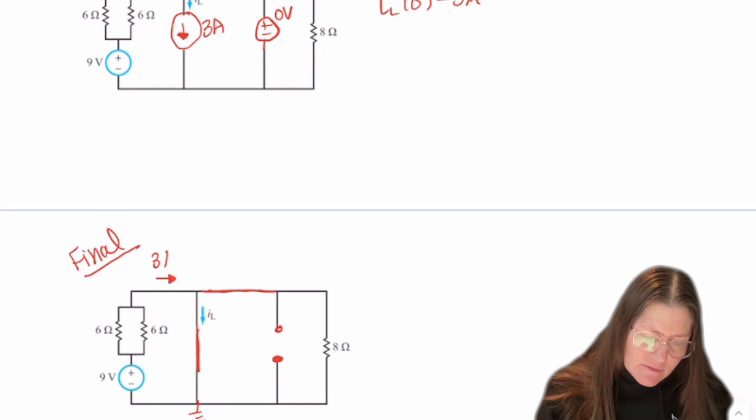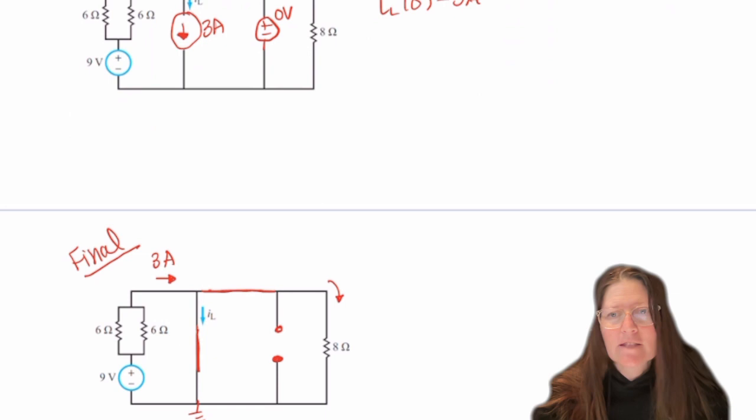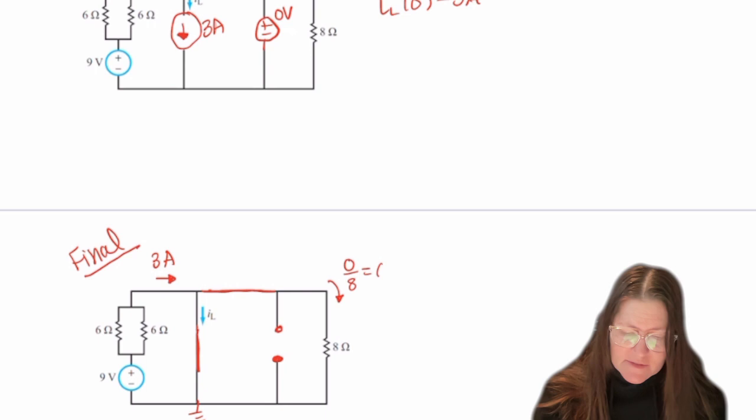Now I need to know if there's any current here. And I see that it's in parallel with a wire. So it's going to be zero over 8, which will be zero amps. So IL of infinity is also going to be 3 amps.